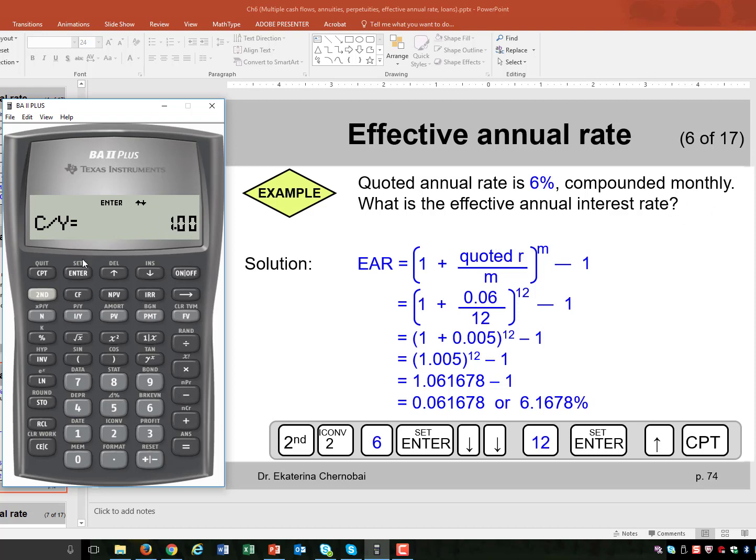You want to change it to 12, 12 times a year, monthly compounding, 12, enter.